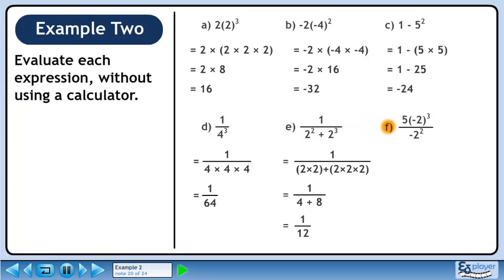In Part F, we'll calculate 5 times minus 2 cubed over minus 2 squared. In the numerator, minus 2 cubed is minus 2 times minus 2 times minus 2 since the exponent is acting on both the negative and the number 2. In the denominator, the exponent is acting only on the 2, so we write it as 2 times 2.